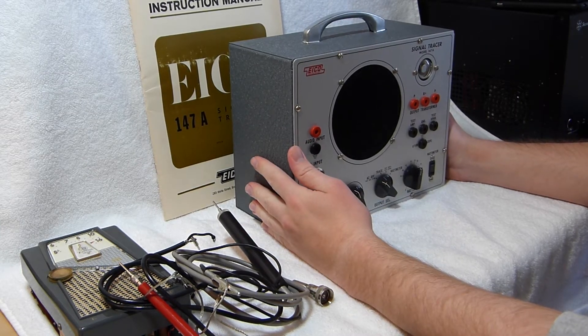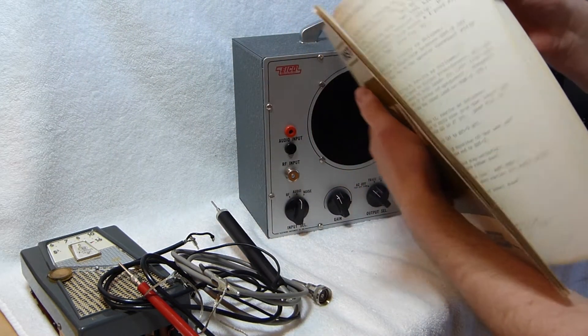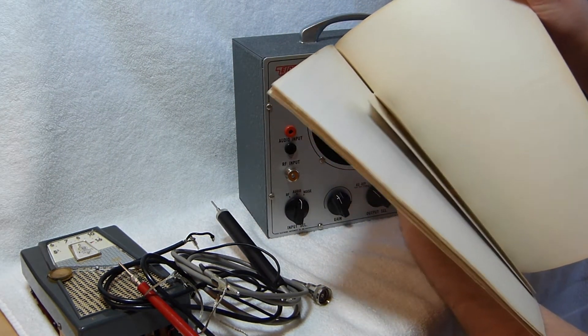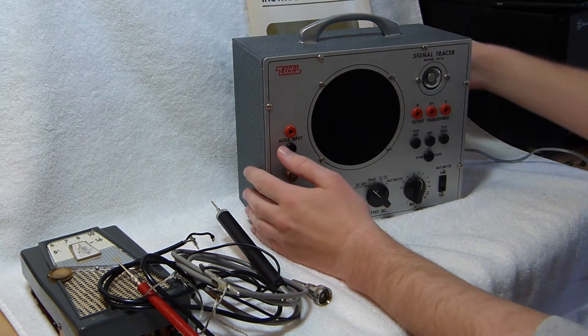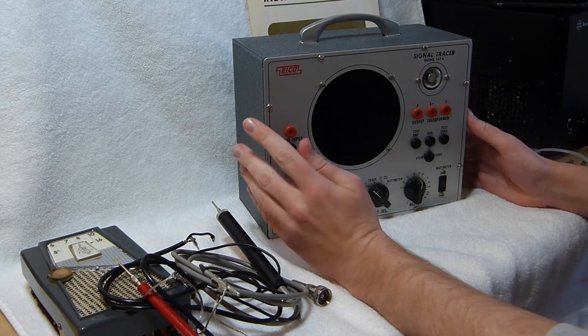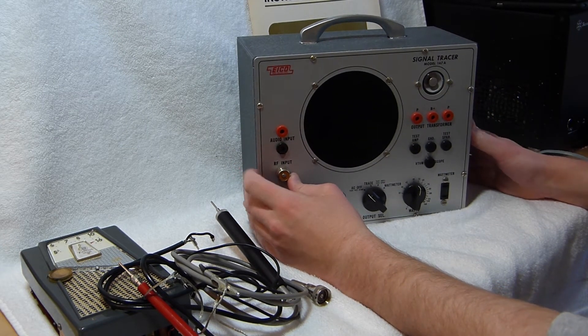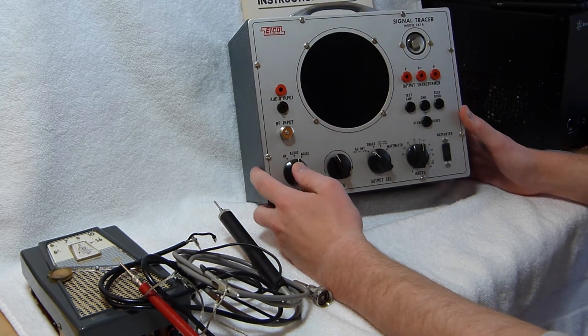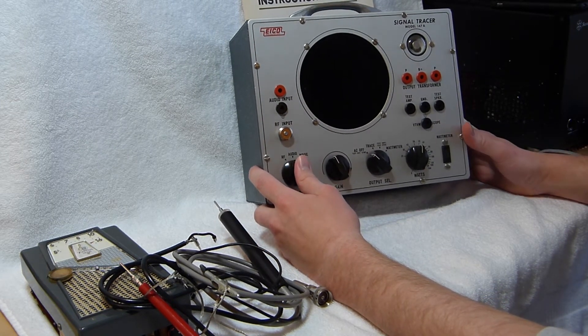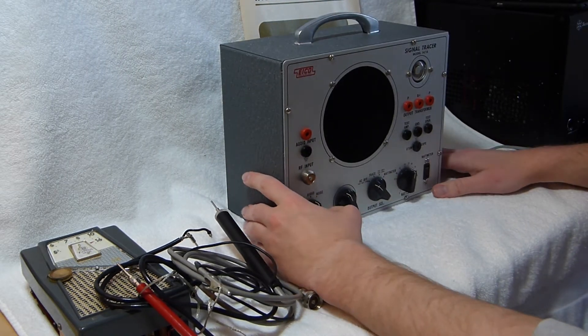This particular one was built in 1978. I know that because the original owner wrote that down in the manual, constructed 9378. I don't know when this kit was actually sold. I think it's a little older than that, but I'm not 100% sure. This model had been in production for a very long time. This is probably one of the later examples.